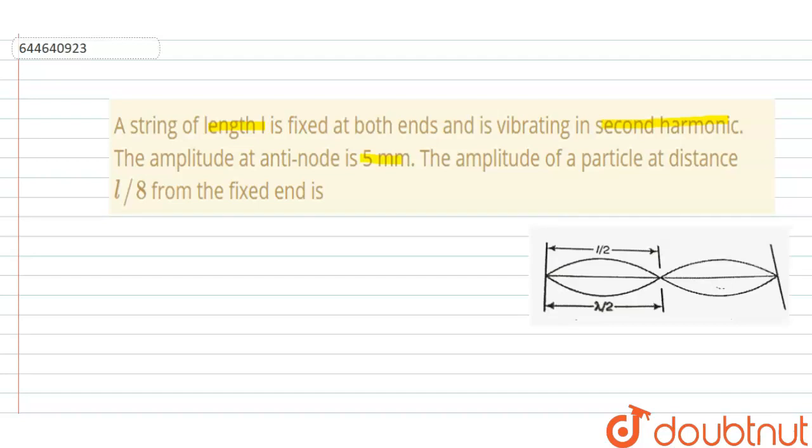Amplitude of a particle at distance 1 by 8 from the fixed point is. So in this question, we have to calculate amplitude of a particle at distance L by 8 from the fixed end.